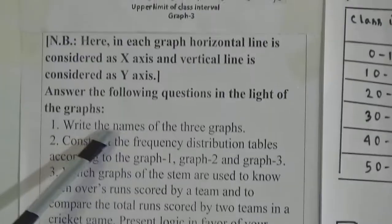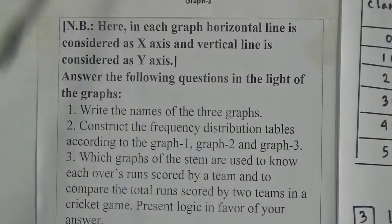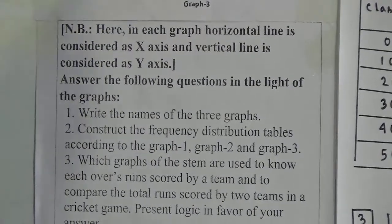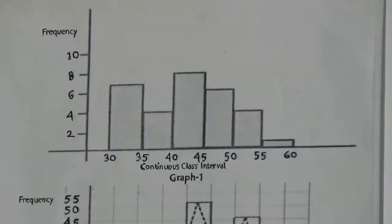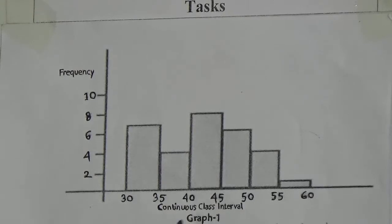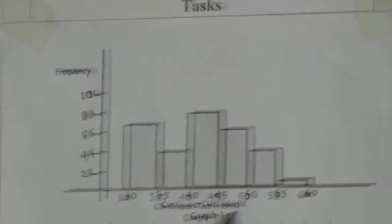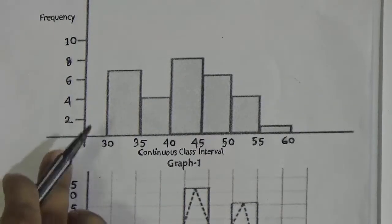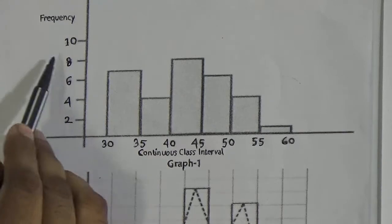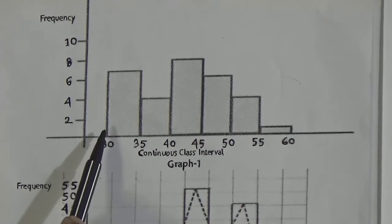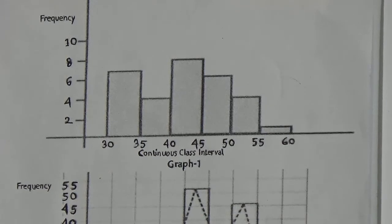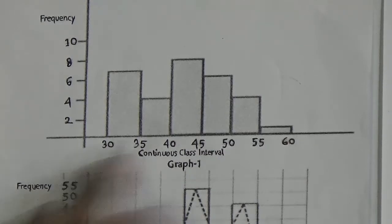Question one: write the names of 3 graphs. Here total 3 graphs exist. We have to find out the name of each graph. In the first graph, along the x-axis continuous class intervals are drawn, and along the y-axis frequency is drawn, and you are watching some columns drawn in this figure. So we can say that this graph is the graph of a histogram.